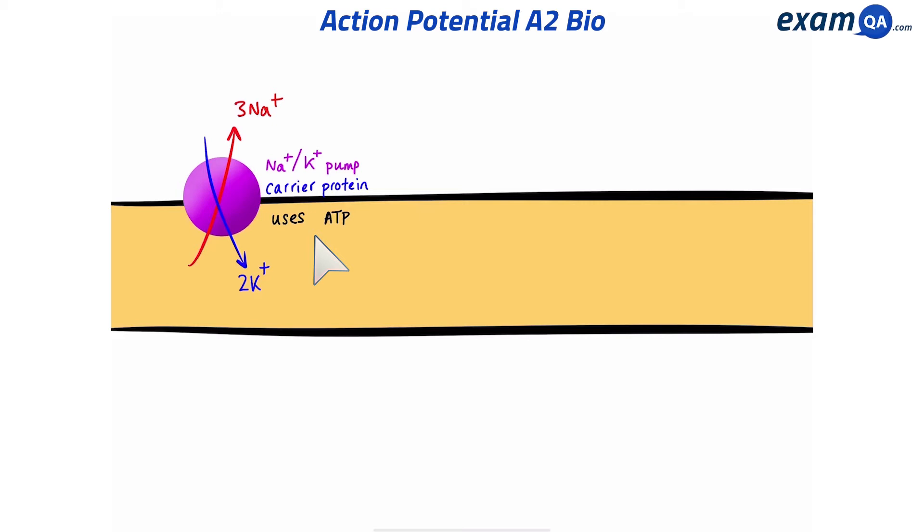The sodium ions on the outside will try to get in by diffusion. To do this, they're going to need sodium ion channels. Since they're polar, that means they're going to need ion channels to go through the membrane.